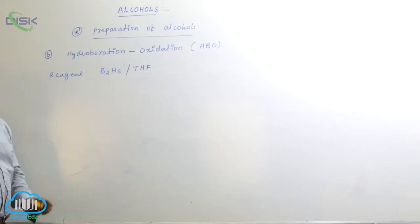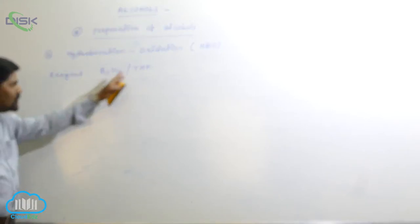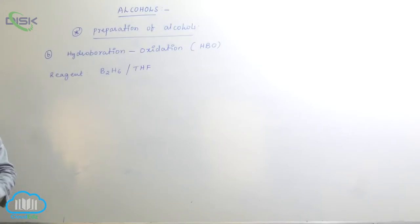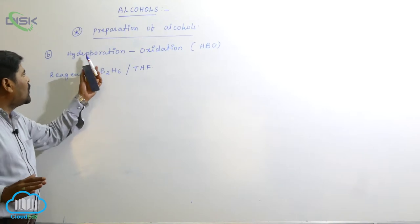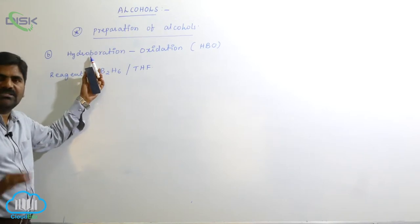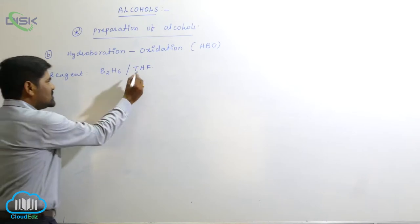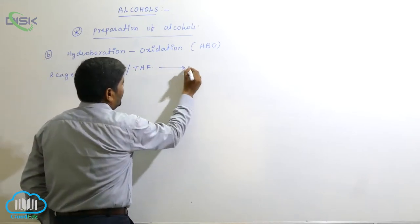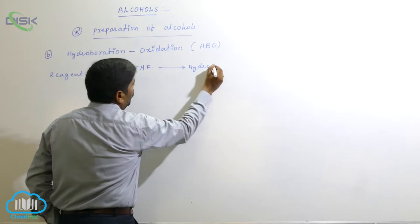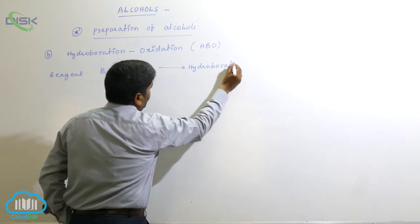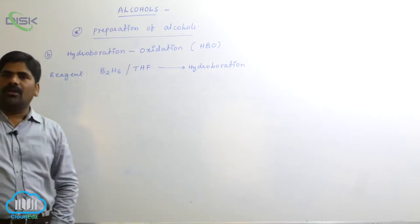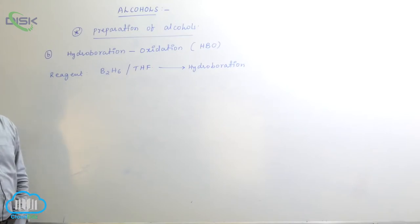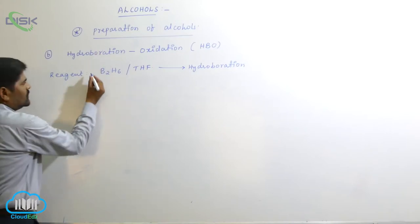When alkene is added to this, it is known as the hydroboration step. Addition of alkene to diborane is known as hydroboration. This is the first step, known as hydroboration, and after this step, trialkyl borane is formed.